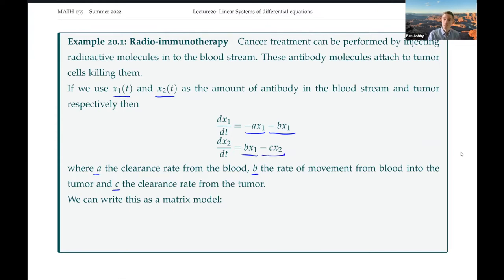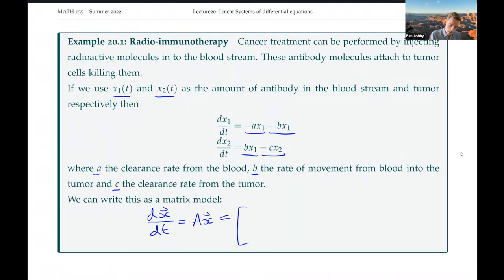So we can write this down as a matrix model: dx/dt equals Ax, where our matrix A is [(-A-B), 0; B, -C] times the vector (x1, x2).